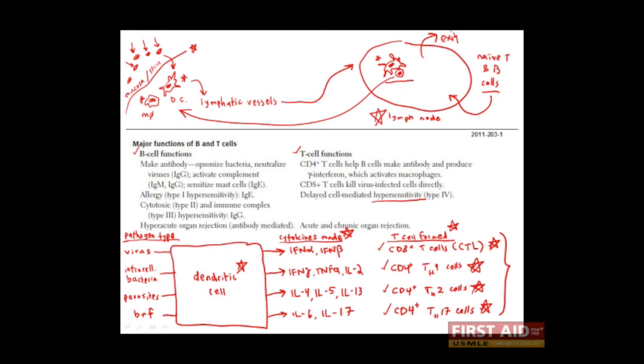The most important cytokines to know for the boards are these. Know that interferon alpha and interferon beta drive the production of cytotoxic lymphocytes. Know that interferon gamma and TNF alpha drive the production of CD4-Th1 cells. Interleukin-4 and interleukin-5 drive the production of CD4-Th2 cells. And the combination of IL-6 and IL-7 drive the production of CD4-Th17 cells.